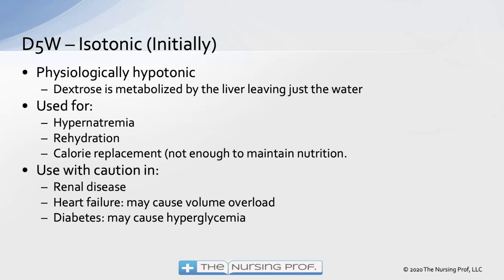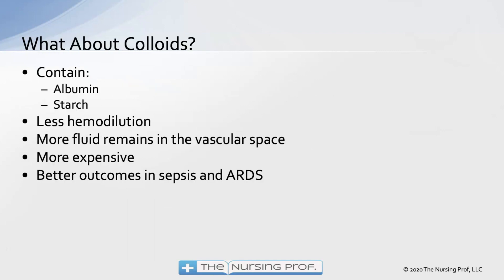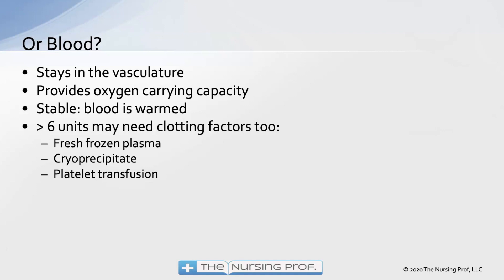Colloids — such as albumin and starch — cause less hemodilution and keep more fluid in the vascular space, though they are more expensive, with better outcomes seen in sepsis and ARDS. Blood stays in the vasculature and provides oxygen-carrying capacity; it is stable when warm for up to six units. If giving that much blood, fresh frozen plasma, cryo, or platelet transfusions may also be needed, since clotting factors are lost along with blood in those cases.